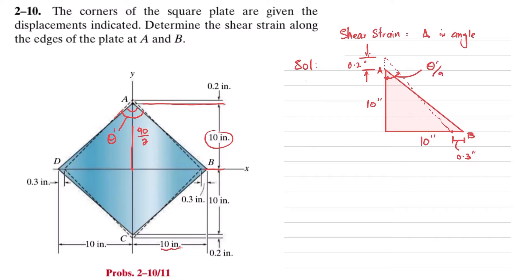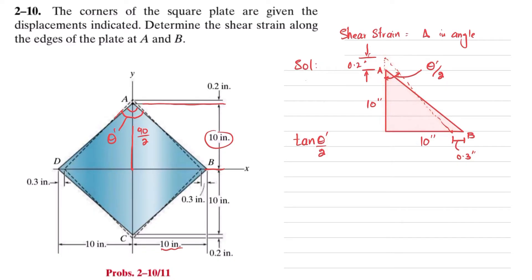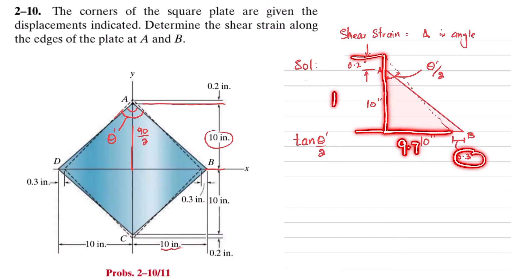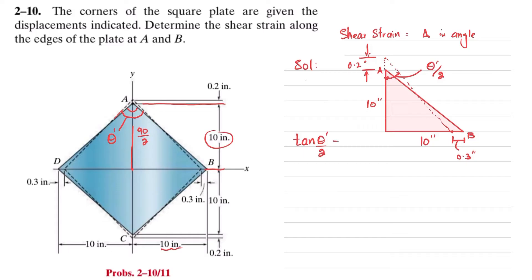So theta dash by 2 is the half-angle. Taking tangent of theta dash by 2, we have a new right-angle triangle. Tangent of theta dash by 2 equals perpendicular over base. The perpendicular is 10 minus 0.3, which is 9.7, and the base is 10.2 inches. So tangent of theta dash by 2 equals 9.7 divided by 10.2.